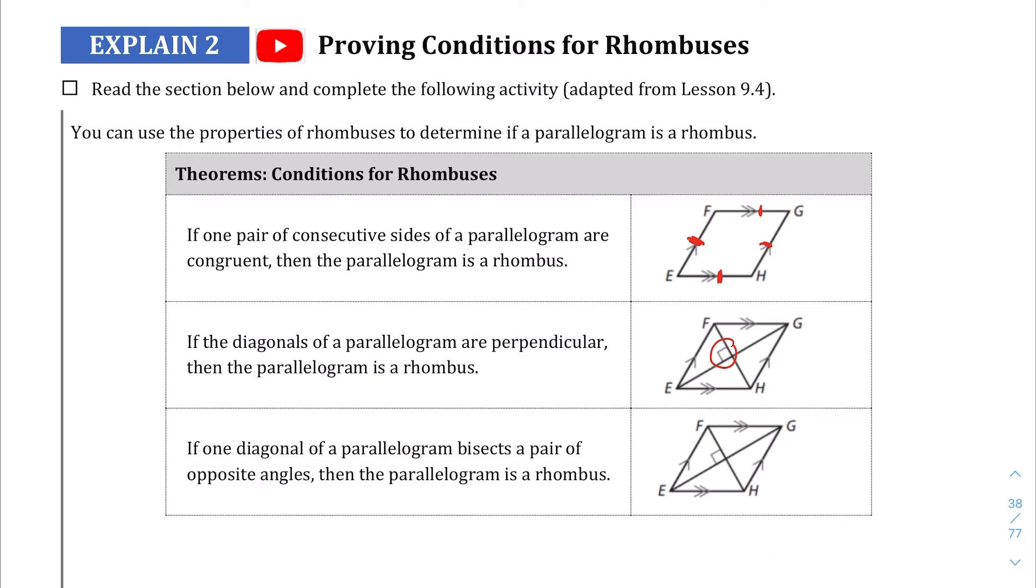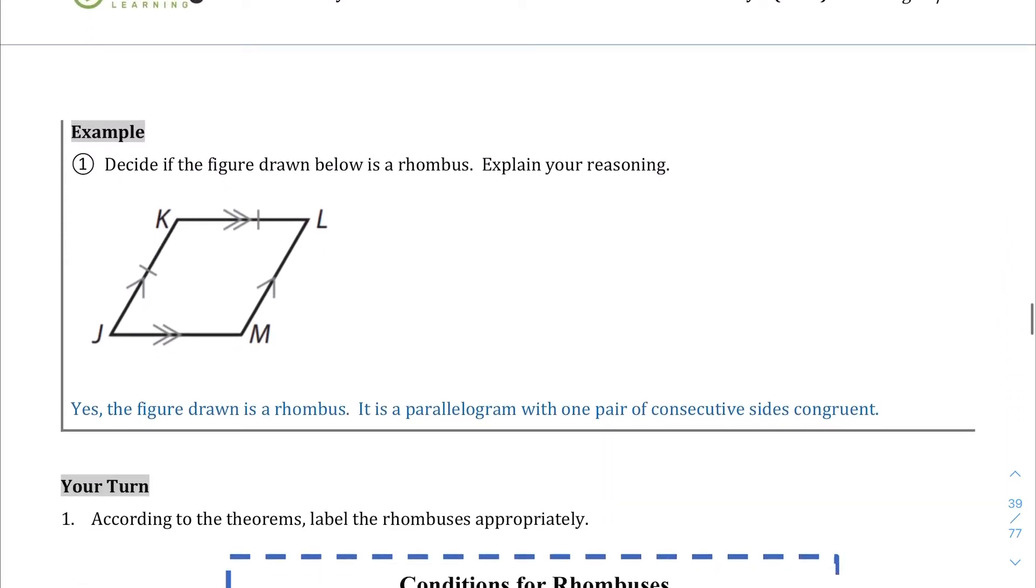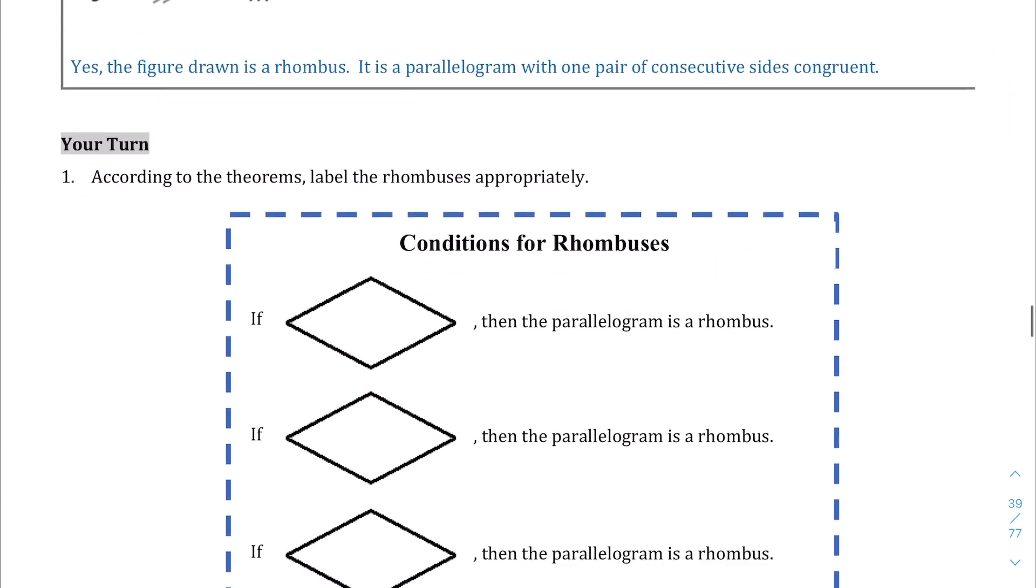opposite angles are going to be congruent to each other. That makes it a rhombus. So we're asked to take those and recreate it here.